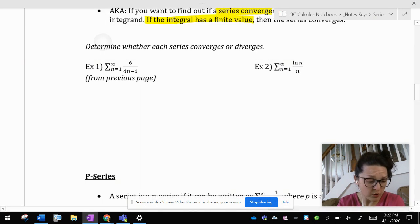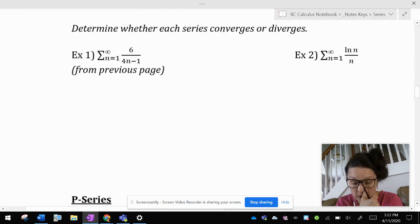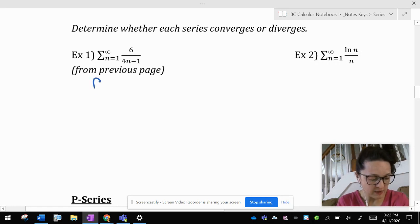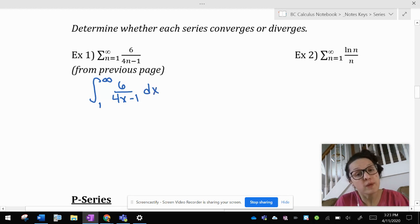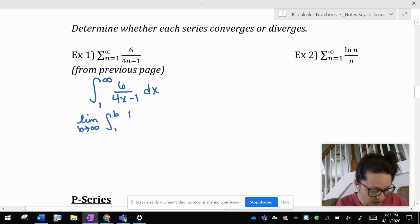Okay, so let's come down here. Now, on the previous page, we had said that 6 over 4n minus 1, as n goes to infinity, heads towards 0. So it has a chance to converge. If I really want to know if it converges or not, I'm going to take the integral from 1 to infinity of 6 over 4x minus 1 and try to evaluate that. Well, this is an improper integral, so it's a good time to remind ourselves that when we have that, I need to rewrite this as the limit as b approaches infinity from 1 to b of 6 over 4x minus 1.